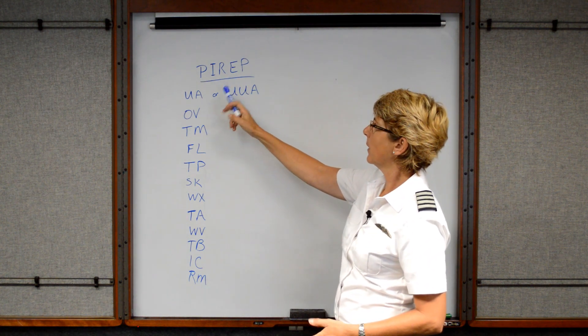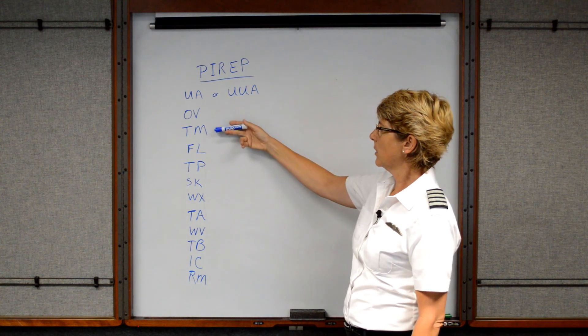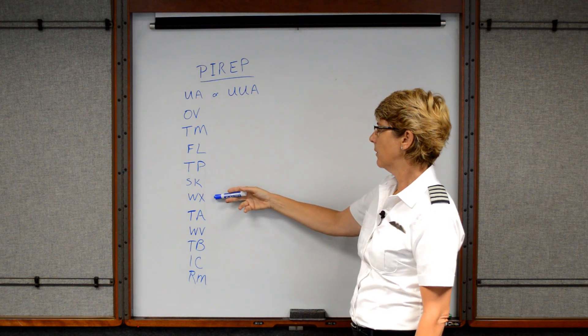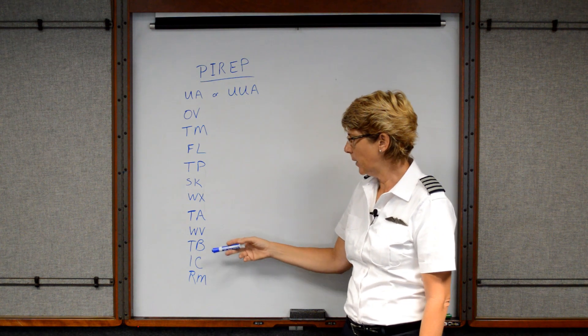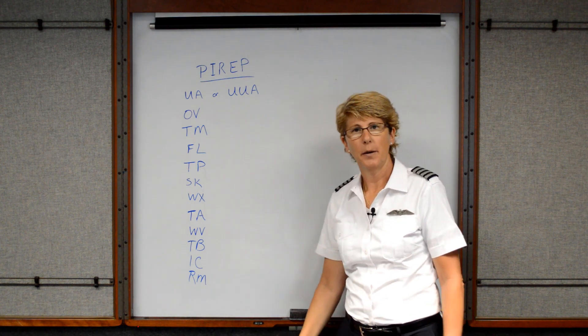So just once again, we have a pilot report, PIREP. We have routine, urgent. This is your position, the time, your altitude, the type aircraft, sky condition, the visibility, the temperature, the velocity of the wind, turbulence, icing, and remarks are the items that you may want to report.